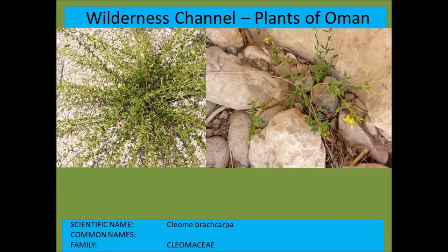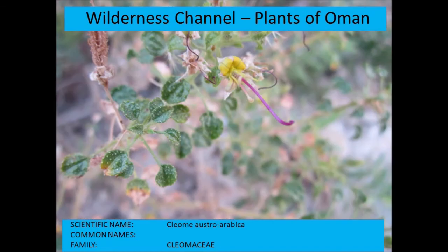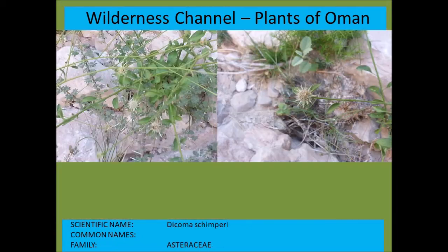Cleome brachycarpa is another of the Cleomaceae species. Cleome scaposa is another species of Cleome. Cleome austroarabica has characteristic glandular leaves.